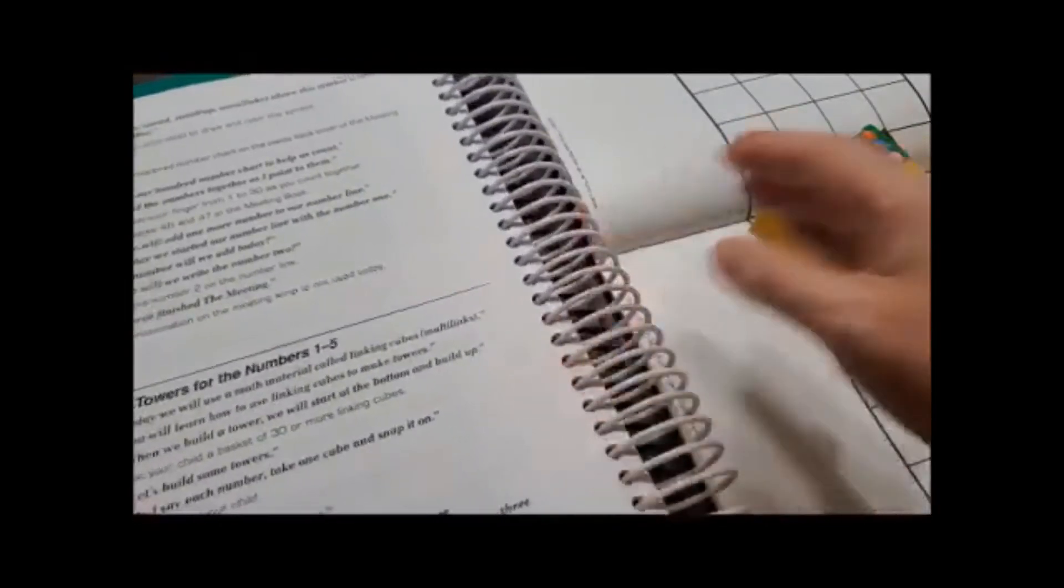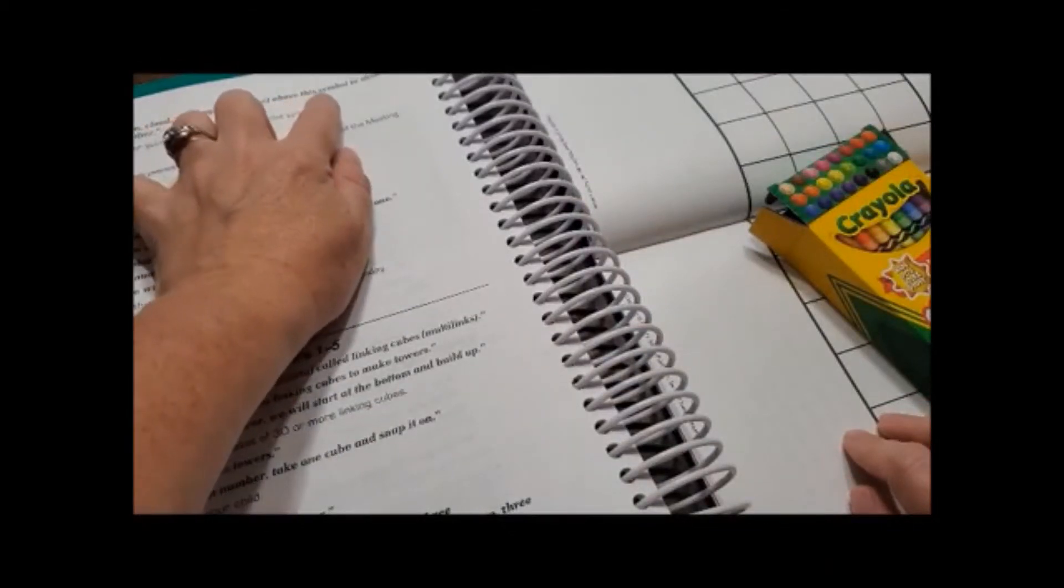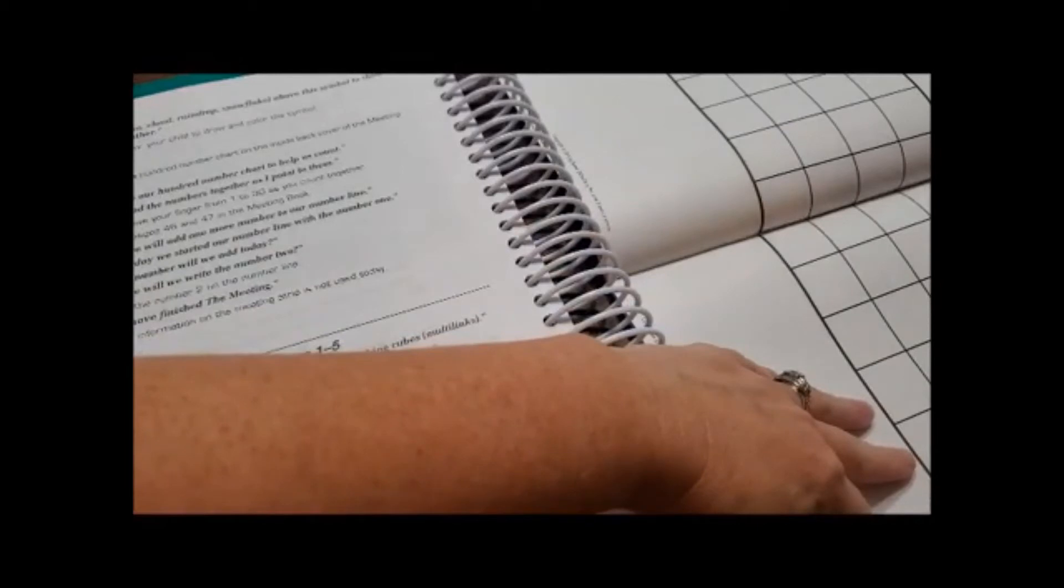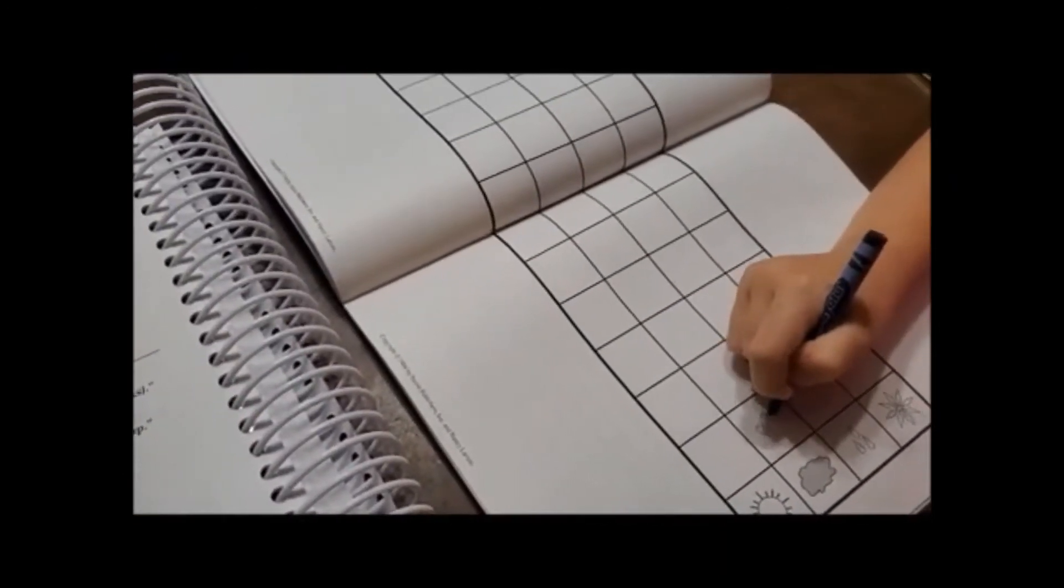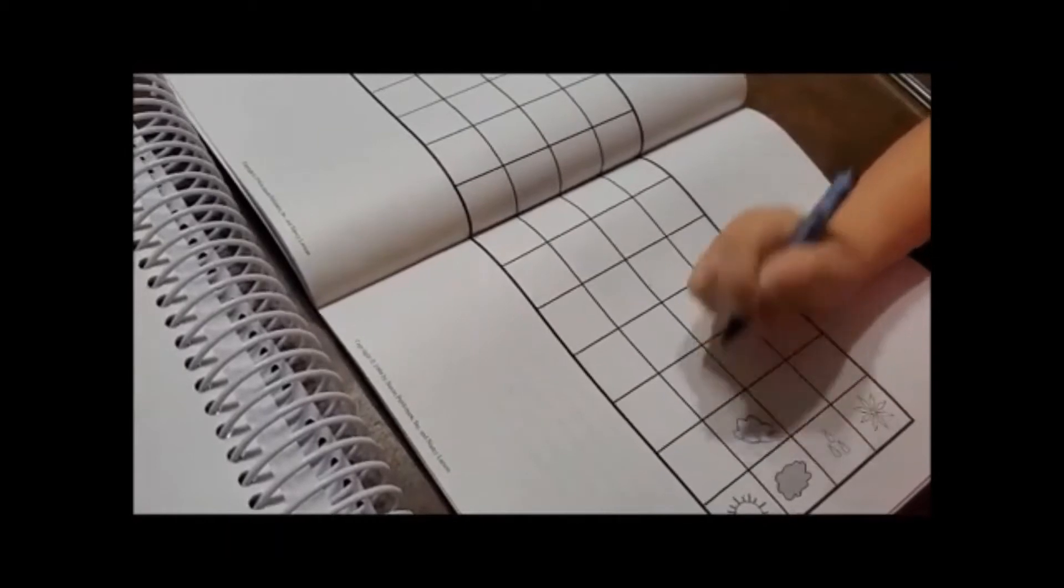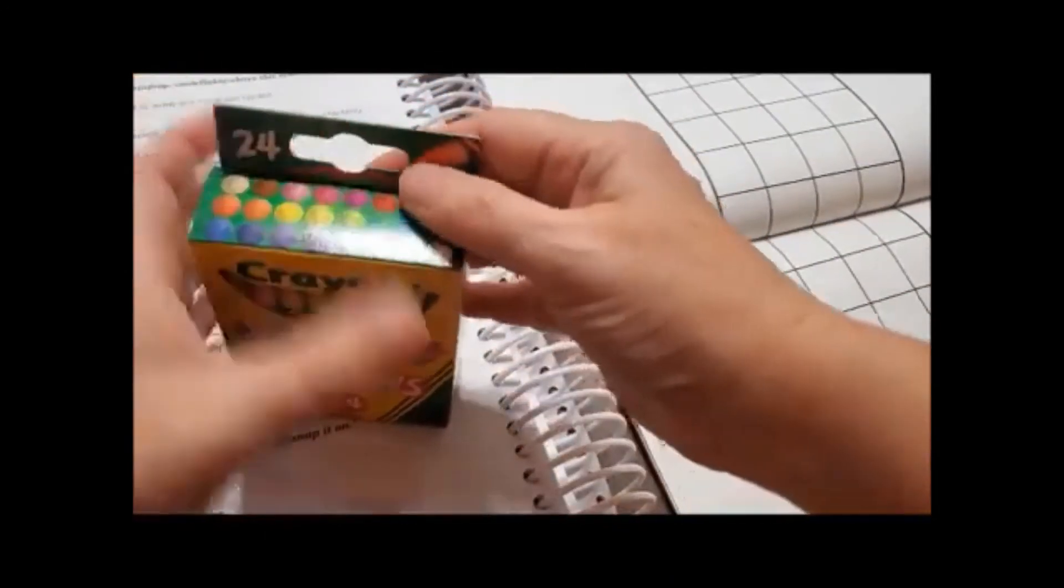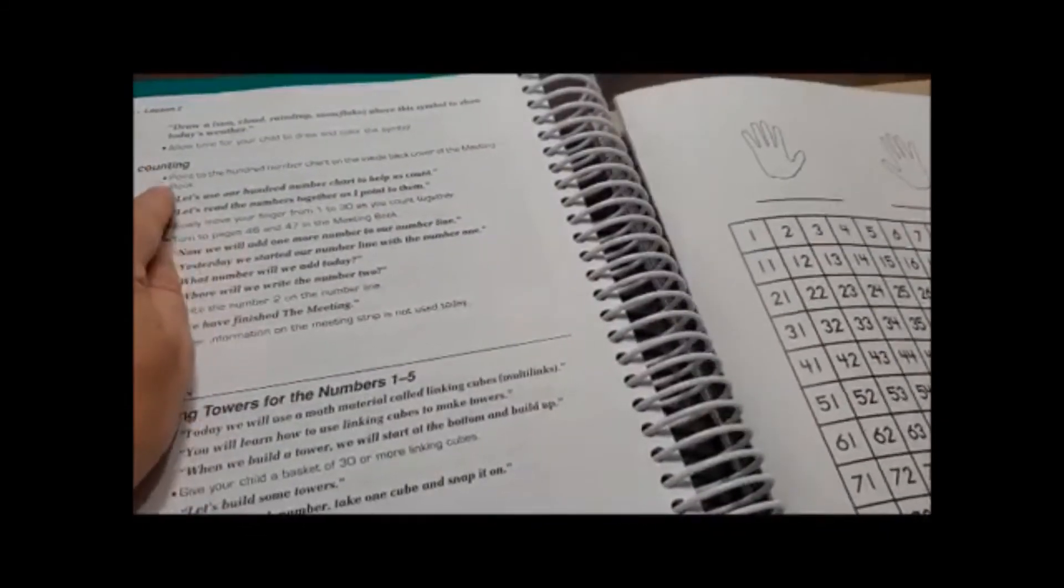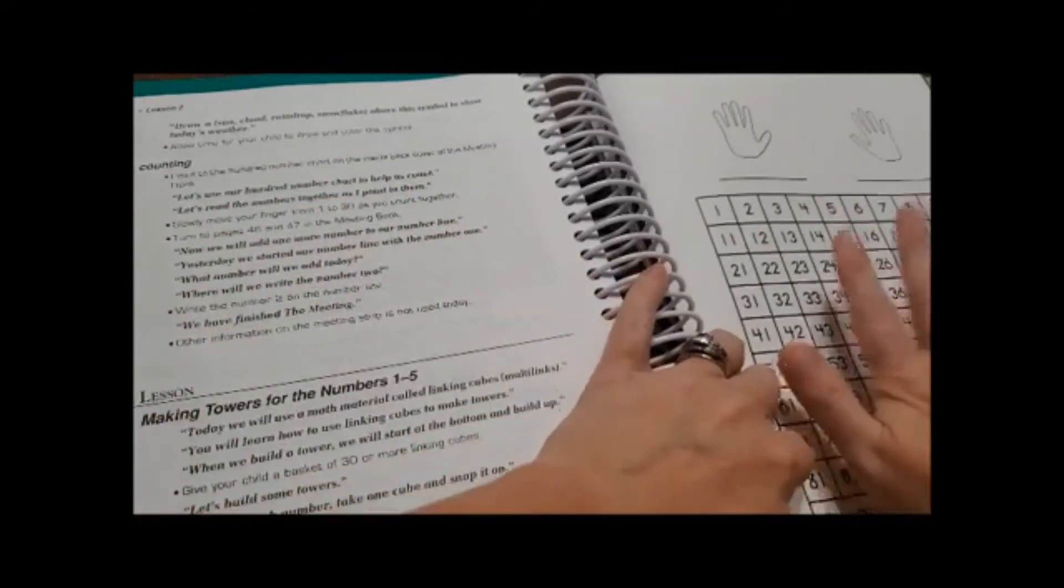Now we are going to draw either a sun, a cloud, a raindrop, or a snowflake above the symbol to show today's weather. So you are going to pick a color, whichever color you want. And since it is cloudy, you are going to draw a cloud right there. There you go. Good job. Now it says we are going to talk about counting. And it says point to the hundred number chart on the inside back cover of your meeting book. That is this right here. Let's use our hundreds number chart to help us count. Let's read the numbers together as we point to them.